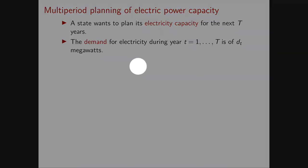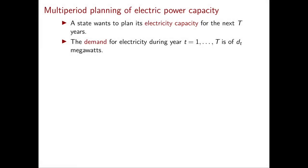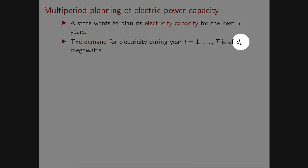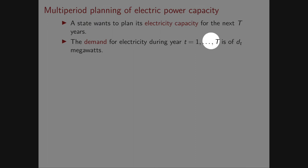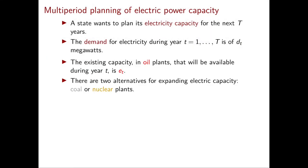Our task here is to plan the electricity capacity for the next capital T years, denoted year 1, year 2, until year T. We already know the demand for electricity that we are required to meet at every year, encoded in the number D_t. So D_t represents the demand in megawatts during year t, for t ranging from 1 to T. In order to meet such demand we already have some oil power plants, and we know how many megawatts these oil plants will produce in each year, encoded in E_t.